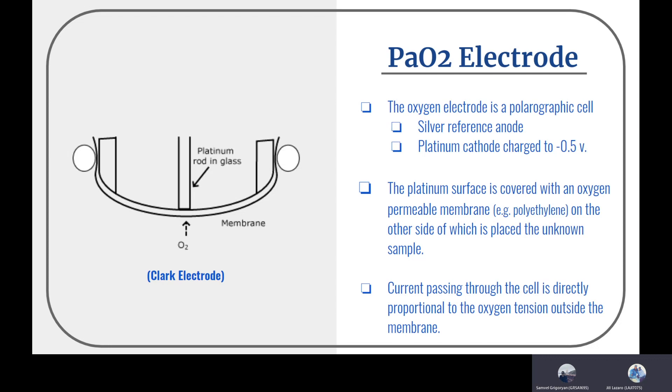The current passing through the cell is directly proportional to the oxygen tension outside the membrane, so it directly measures the oxygen amount. Another name for this one is the Clark electrode, named after the scientist that came up with that sensor.